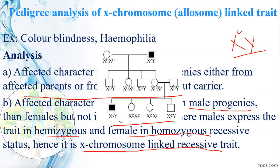Looking at this: if a trait is recessive or dominant, it determines whether one generation is skipped. For hemizygous condition, the male always expresses color blindness. For females, normal vision requires two capital C alleles — homozygous. The carrier female has one capital C and one small c, and she does not express color blindness but carries the recessive allele.